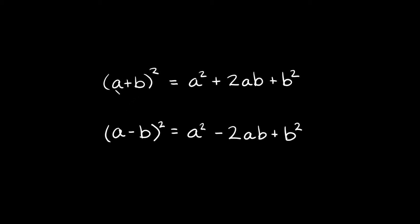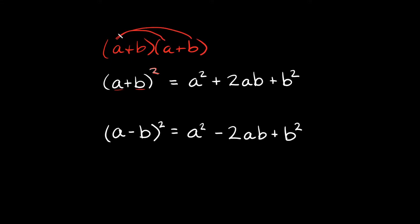So there's an addition one and a subtraction one, but they both basically work the same way. With the addition one, if I'm adding two terms together and I'm squaring that whole thing, instead of having to FOIL — like a plus b times a plus b, going through first, outer, inner, last — you can basically use this formula. So if you're squaring this binomial, this is going to be equal to the first term squared plus the second term squared, and then you add that to two times the two terms multiplied together.